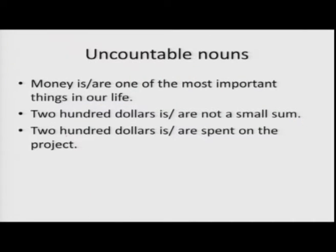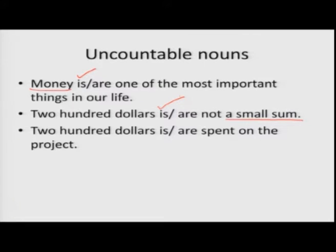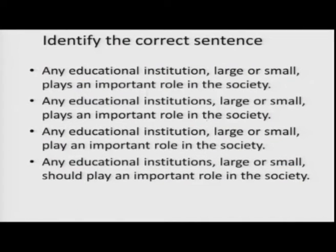We have looked at some cases of uncountable nouns. For example, 'money' is uncountable, so 'money is.' But if you say '200 dollars,' there are two possibilities. '200 dollars is not a small sum' — here you are treating it as one entity, so you use 'is.' There may be 200 notes, but you see all of it as one. '200 dollars are spent on the project' — here you are counting each dollar individually, so you use 'are.'